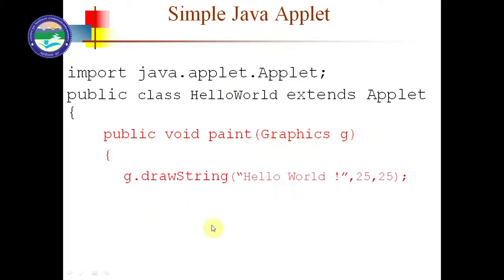We write public void paint and Graphics g, and in place of System.out.println we write g.drawString("Hello World") and it will be printed at position 25, 25. This is the drawString function. By this function we can print the Hello World string on the Applet in the browser. The output will be displayed on the browser at position 25, 25, and we are writing drawString instead of System.out.println — everything in Applet will be drawn using draw methods.